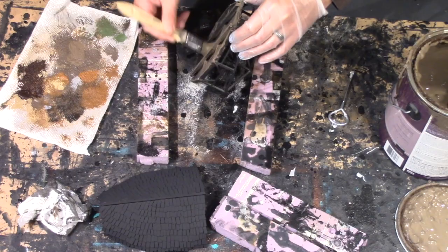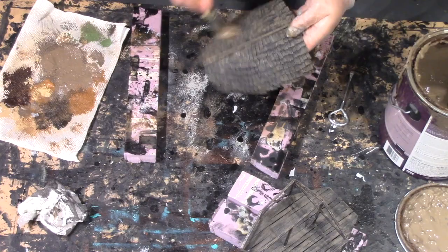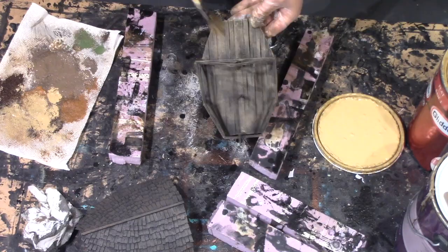Spray painted all of that flat black and then came along and did a dry brush of that dark brown again. This will be for the structure as well as the roof. Once that's dry then we can come along with a lighter tan color and dry brush that on.